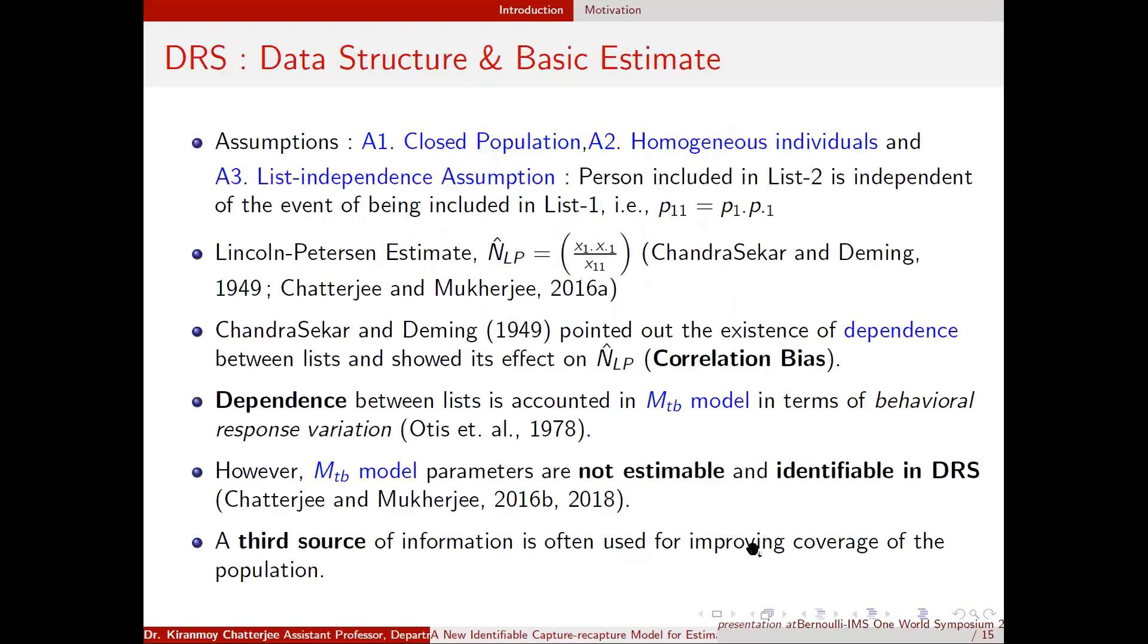So assuming list independence assumption along with the closed population and homogeneity assumption of the individuals, the basic estimator of the population size is developed by Lincoln Peterson and it is also very popular by the name of Chandrasekhar and Demin. Later, Chandrasekhar and Demin pointed out that this estimator suffers from bias. If there is dependence between the two sources then this estimator gives you an underestimate.